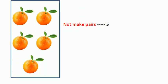Now in the next picture, do all the oranges make a pair? Some are paired, but one is extra — one is left without pairing. So we can see that in this picture the oranges are not paired. The numbers which do not make pairs are called odd numbers.